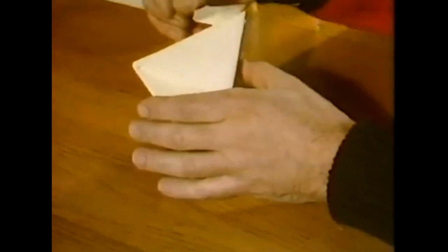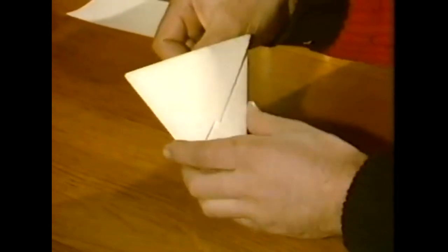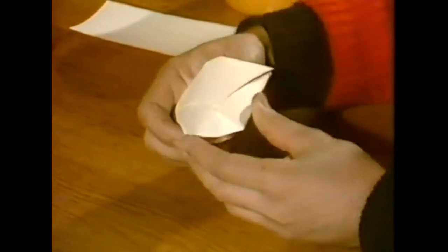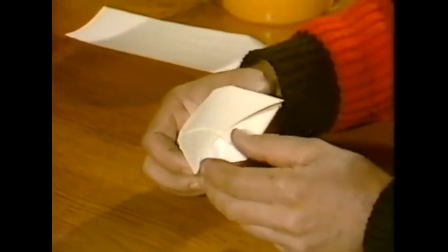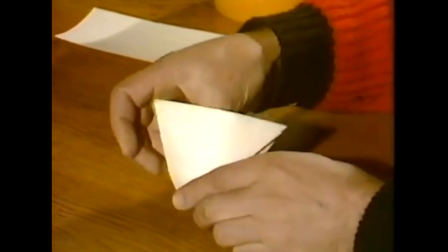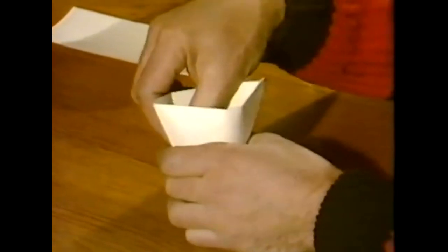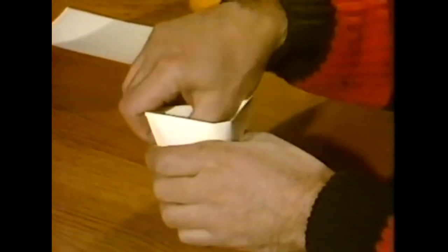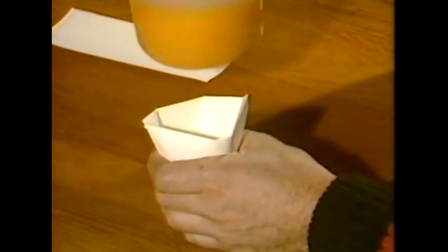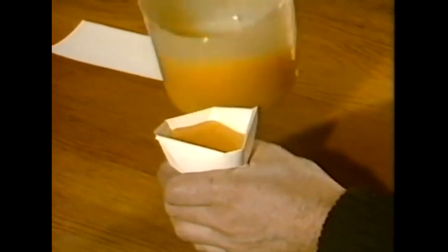To hold it open, you can put your thumb in there, open it out, and just press the bottom in slightly, which will make it retain its shape. And then you can fill it. As long as it's not absorbent paper, it'll hold the juice perfectly acceptable for long enough to give you a drink. And I think I win because it's actually bigger than the other two glasses. Cheers.